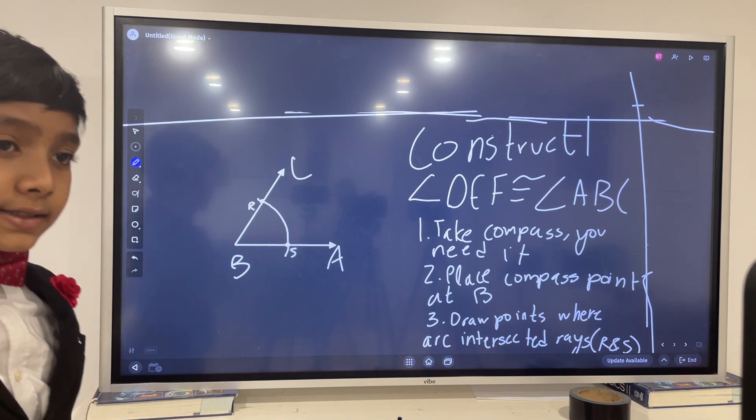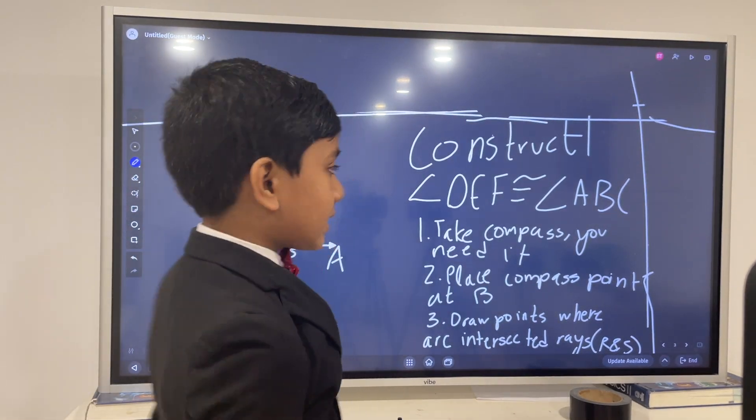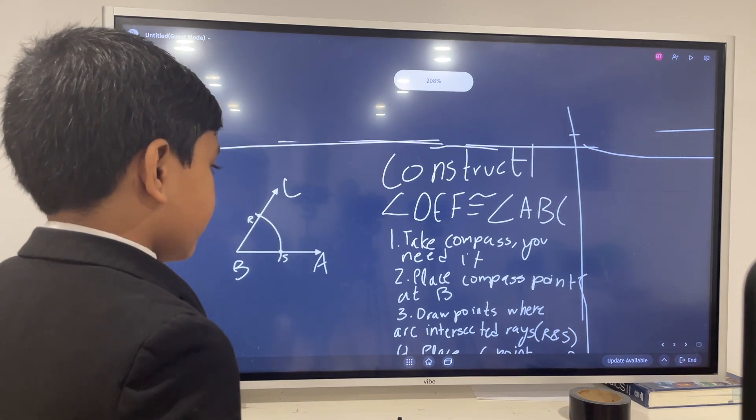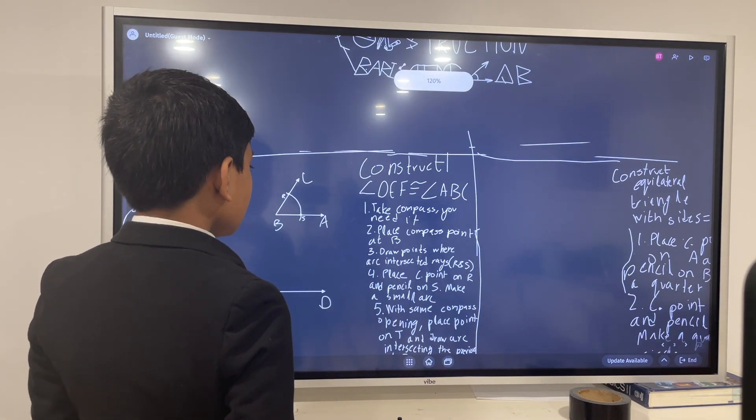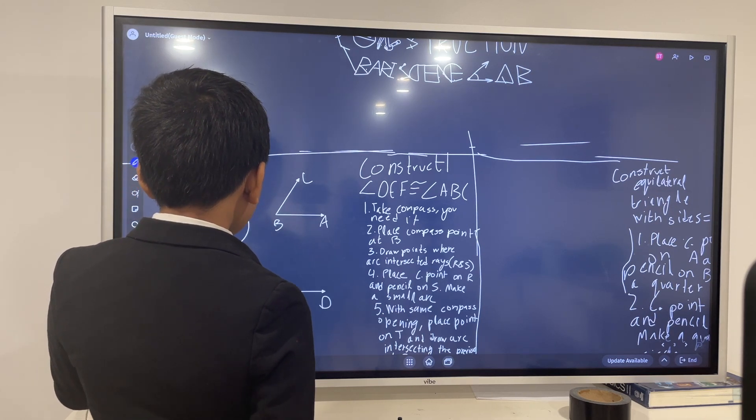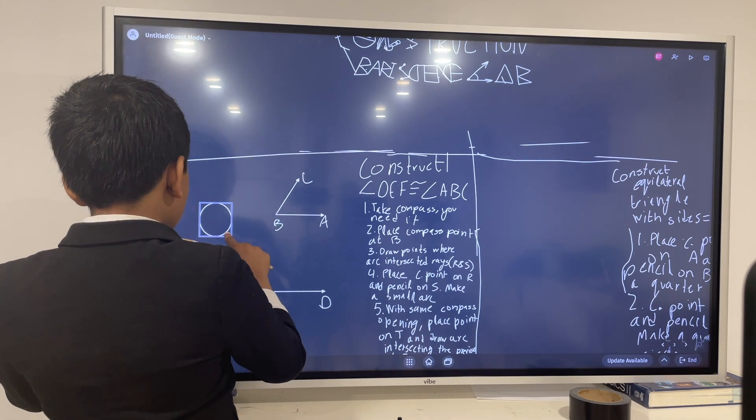And then now we draw an arc that goes through ray BC and ray BA. And now we draw the points where our arc intercepted the rays. So R and S. Of course, the arc is a visualization of an angle and it doesn't actually intercept, but this will help us draw more stuff. This is probably a bit too big. I'm going to use a smaller circle.